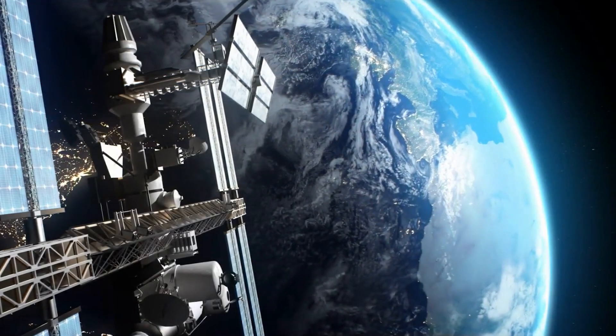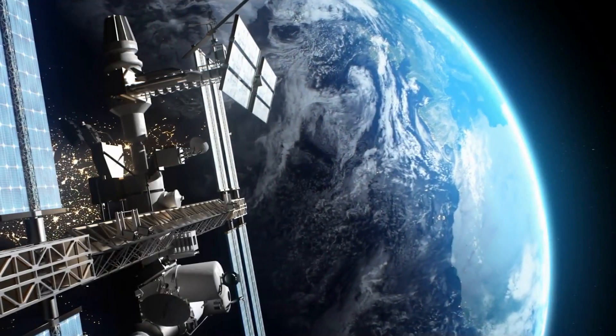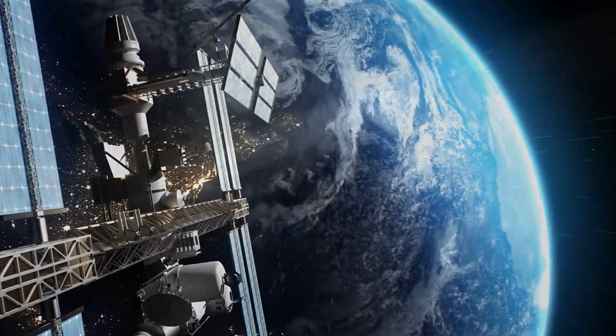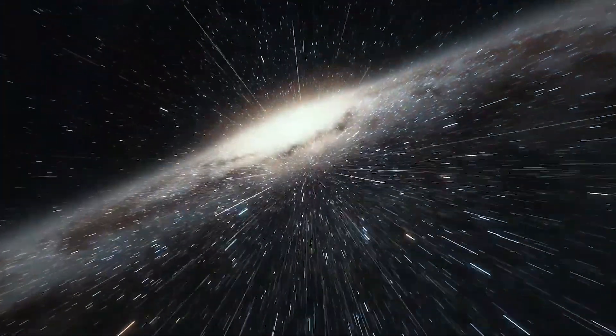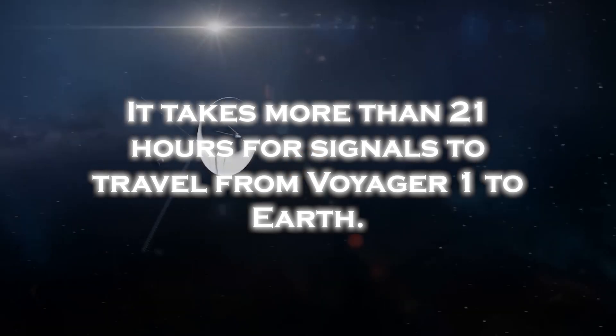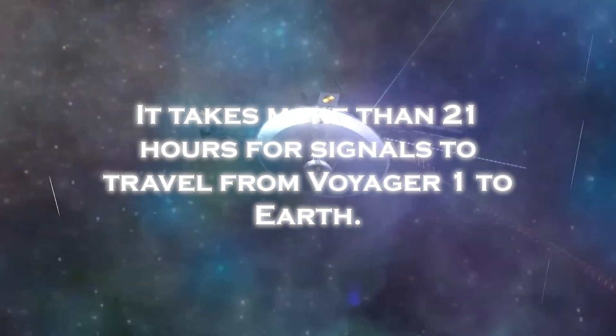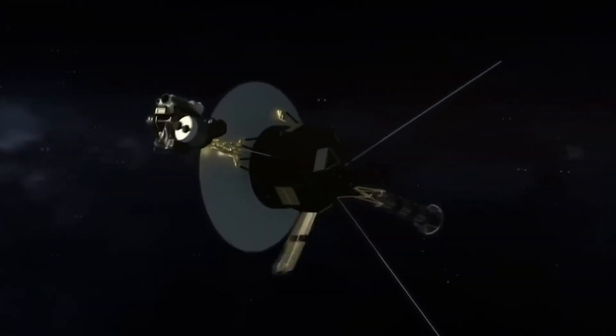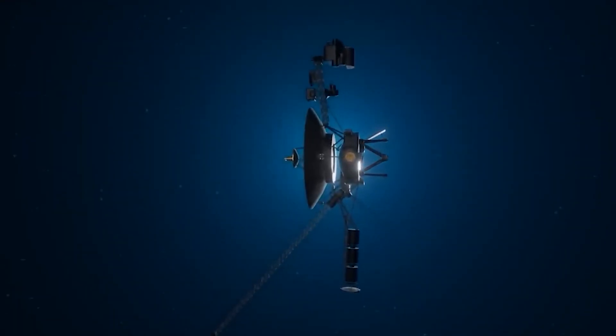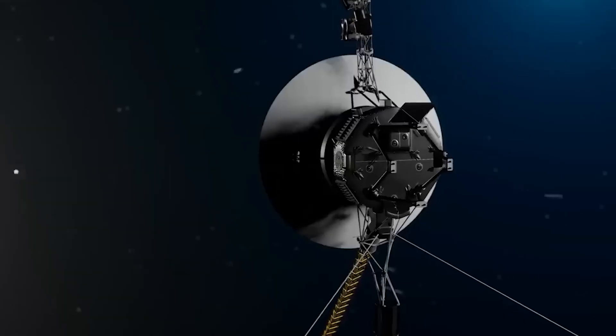However, the great distance between Voyager 1 and Earth presents a significant challenge to maintaining effective communication. As the spacecraft ventures into interstellar space, Voyager 1's signal strength has weakened. It takes more than 21 hours for signals to travel from Voyager to Earth. The weak signal, combined with interference from background noise, makes it difficult to transmit and receive data.